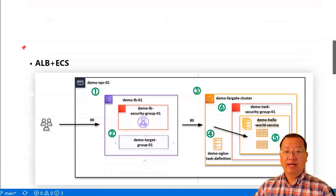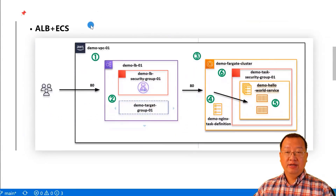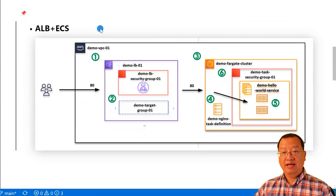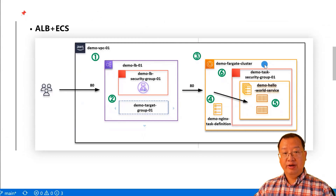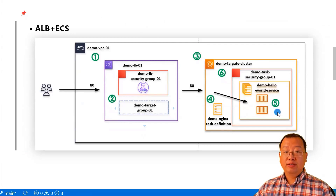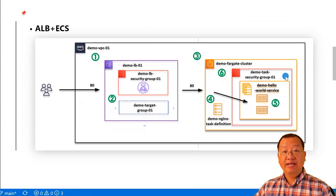Once the network resources are created, we move to the application load balancer and Elastic Container Service level. In this level, we will create an application load balancer and an ECS cluster. There are six resources created in this level: an application load balancer, demo-lb01, is created; security group and target groups are created; demo target cluster is created; a demo nginx task definition is created; based on the task definition, a service with two desired count is created; and finally, a security group is created that only allows inbound traffic from the application load balancer.